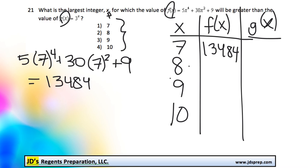And then we'll do the same thing for 8, 9, and 10. Again, just replacing your x value each time. So for an x value of 8, if you calculate that, you should get 22,409.